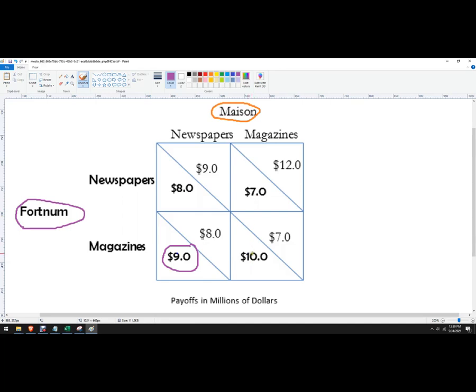Next we're gonna do Mason. Let's say Fortnum decides to do newspapers, which one is better for Mason? It's better to do magazines because 12 is higher than nine. If Fortnum decides to do magazines, we're comparing these two right here. Mason should actually do newspapers because eight is higher than seven.